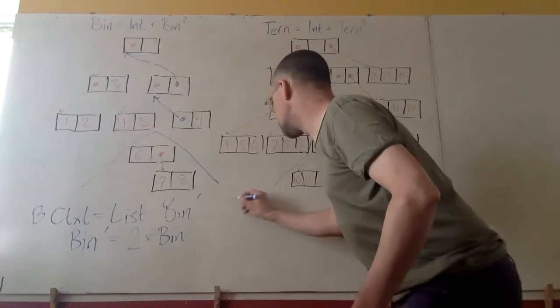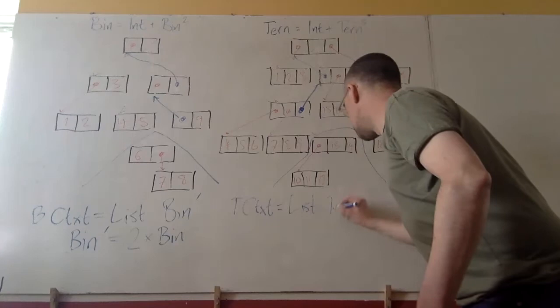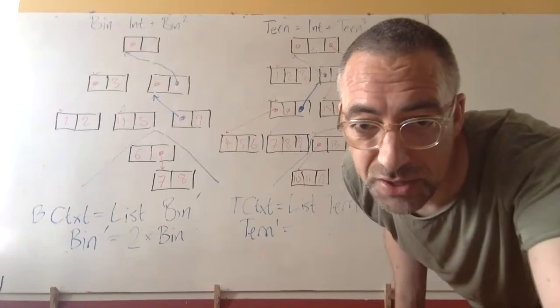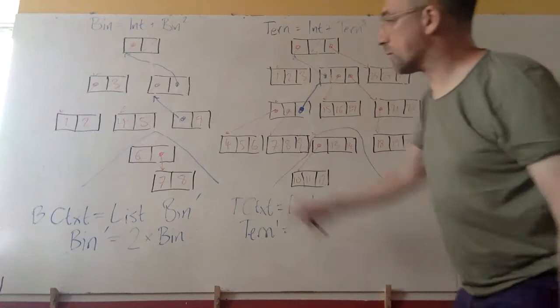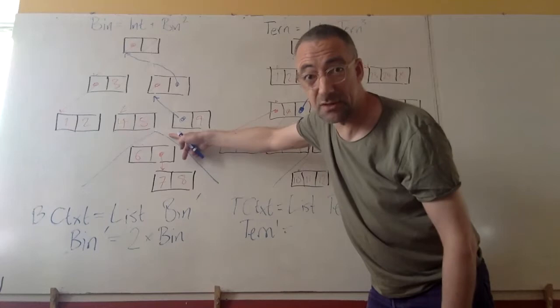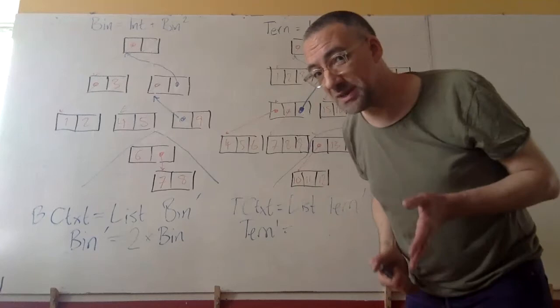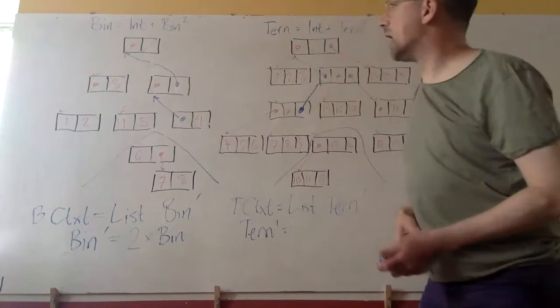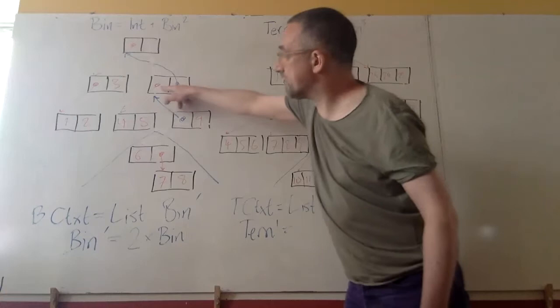The b-context is a list of bin-prime and the t-context is a list of tern-prime. We're not choosing — we're noticing what was chosen. The choices were all made when I selected the subtree to be in focus. The question is: which pointers did I follow to get to the subtree in focus? To interpret the structure correctly as a path back to the root, I need to know which of the cells has the blue pointer.